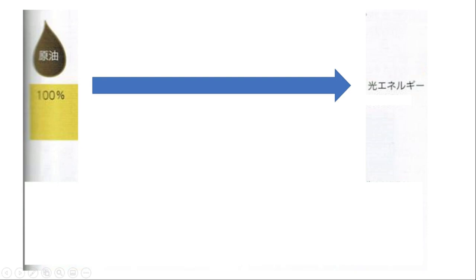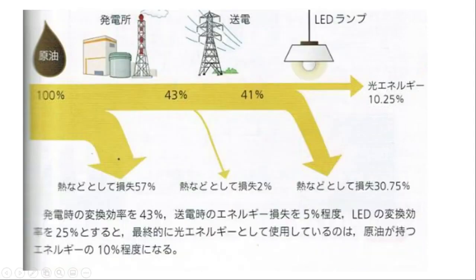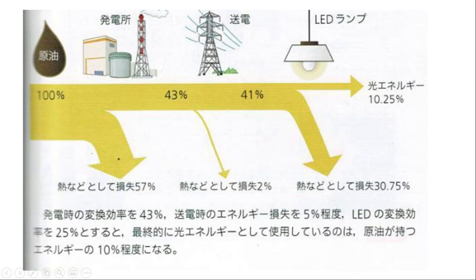たとえば、資源エネルギーの原油を、概念エネルギーの光に変換するとき、図のように、発電所で57%、送電で2%、LEDランプの熱で約31%のロスがあって、光エネルギーになるのは、10%くらいしかないんだ。